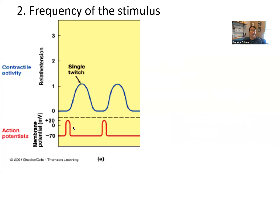Of course, without another stimulus, the muscle is going to relax fairly quickly. Cross bridges release, calcium is pulled back into the sarcoplasmic reticulum, and tension reduces. Here is another stimulus — latent period, contraction, lots of cross bridges forming, and relaxation when calcium goes back and cross bridges stop forming. So, one stimulus, one muscle twitch.